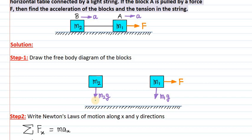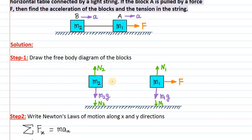These two blocks will press the ground because they are placed on the table. They will press the table downwards with normal reaction forces — let us call them N1 and N2. Due to their weights, they press the table downwards. According to Newton's third law, both blocks will experience the same amount of reaction force from the table in the opposite, upward direction. The table will exert the same amount of upward force on the blocks as a reaction.